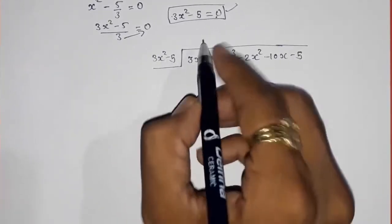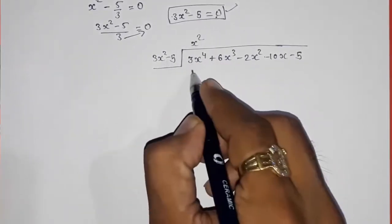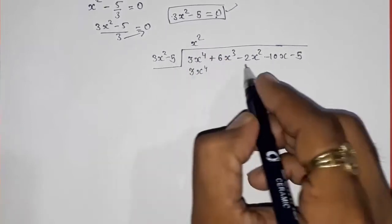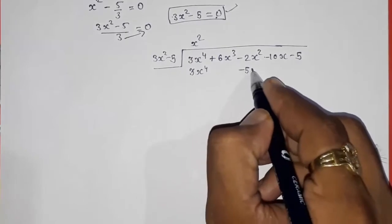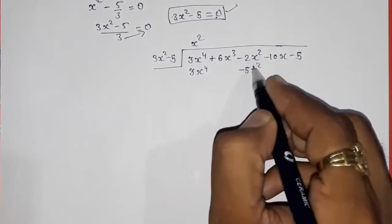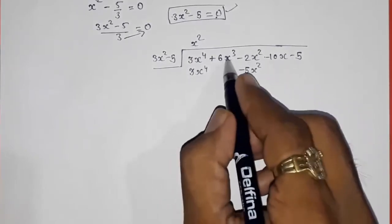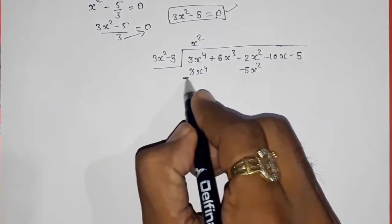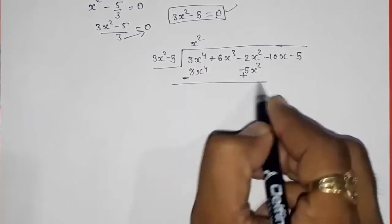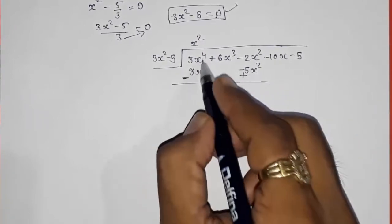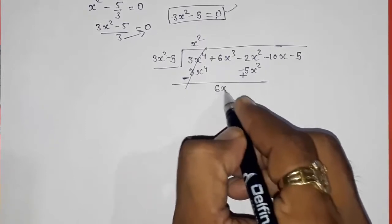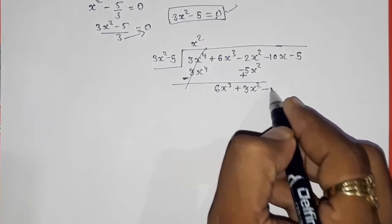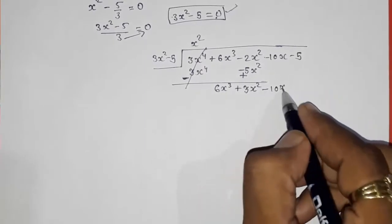Now 3x square multiply with x square gives you 3x raised to 4. x square multiply with minus 5 gives minus 5x square. Now I am going to keep it here because these are the like terms. We can add and subtract this only. Now minus sign, change of this and this also sign change. Now this will get cancelled. 6x cube plus 3x square minus 10x minus 5.